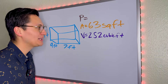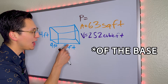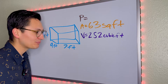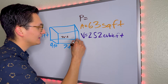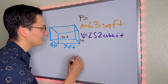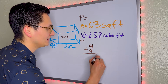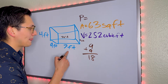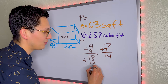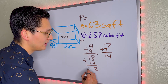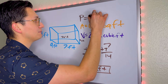And now for the easiest one: perimeter. Add all sides. What we know about rectangles is that opposite sides are equal. So if this is 7, this is 7 feet. If this is 9 feet, this other side is 9 feet. So 9 plus 9 is 18, 7 plus 7 is 14, and 18 plus 14 gives us 32 feet as the perimeter.